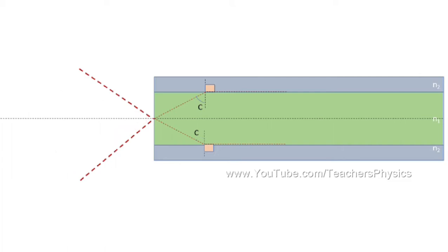This representational figure is in a two-dimensional plane. When we consider the three-dimensional scenario, this triangular section forms a conical section. This conical section through which light has to enter into the OFC to undergo multiple total internal reflections is known as the acceptance cone of the OFC. This implies that there is a maximum value of angle of incidence at the core-ambient medium interface beyond which light does not propagate but is instead refracted into the cladding. This maximum value of angle of incidence is known as the acceptance angle, represented by alpha_m.